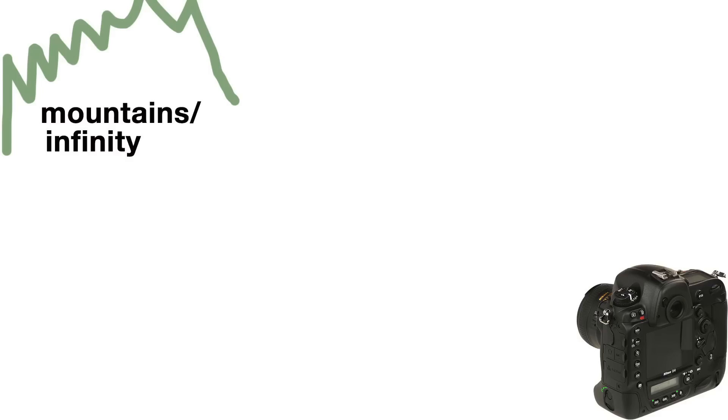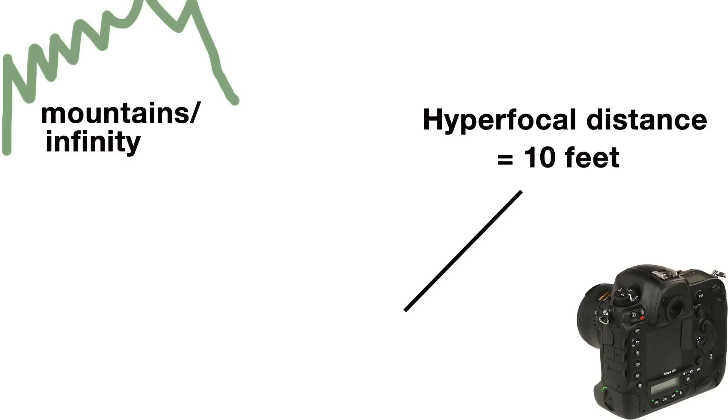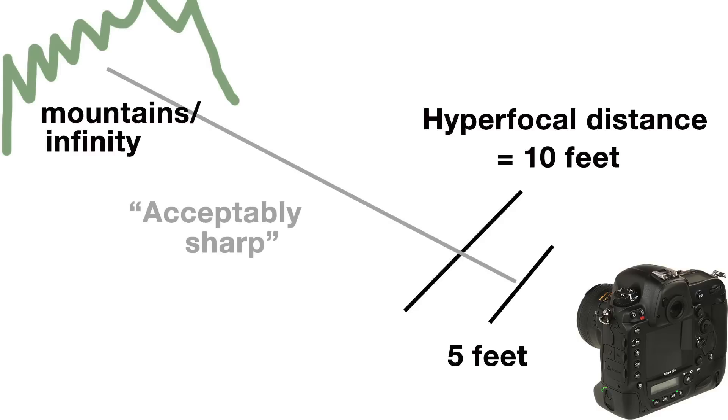How it actually works: when you have your lens at hyperfocal distance, half of that distance to infinity is going to be in sharp focus. Let's put some numbers on that — if your combo gives a hyperfocal distance of 10 feet, that means from five feet to infinity is going to be acceptably sharp. Now why is that handy? Well, there are heaps of reasons.